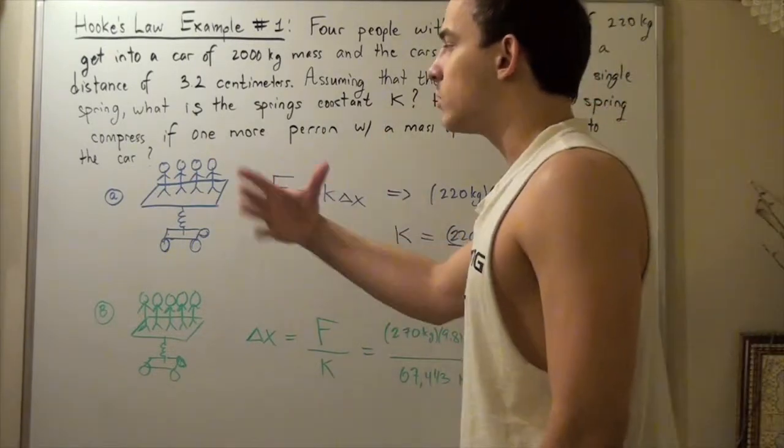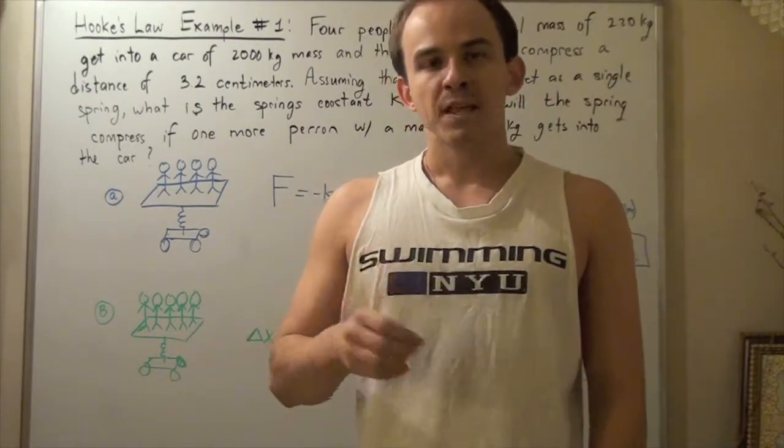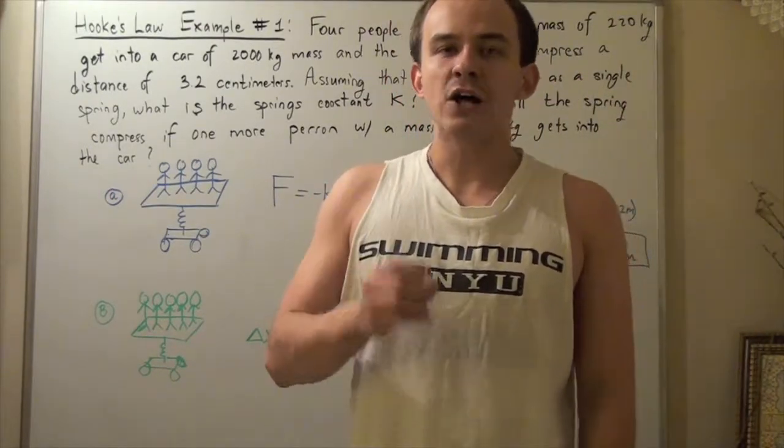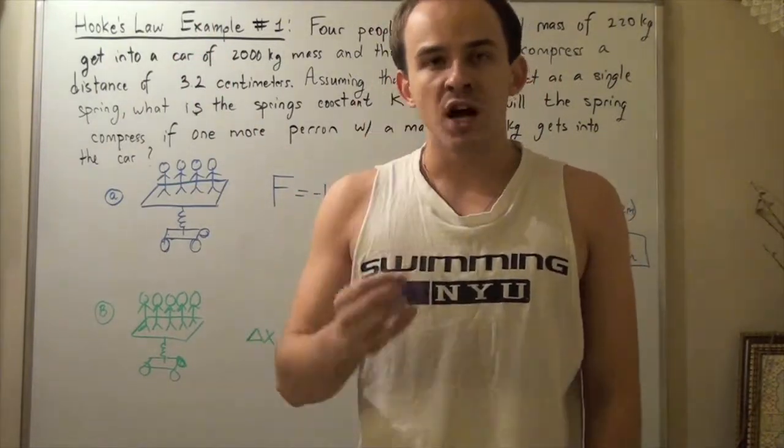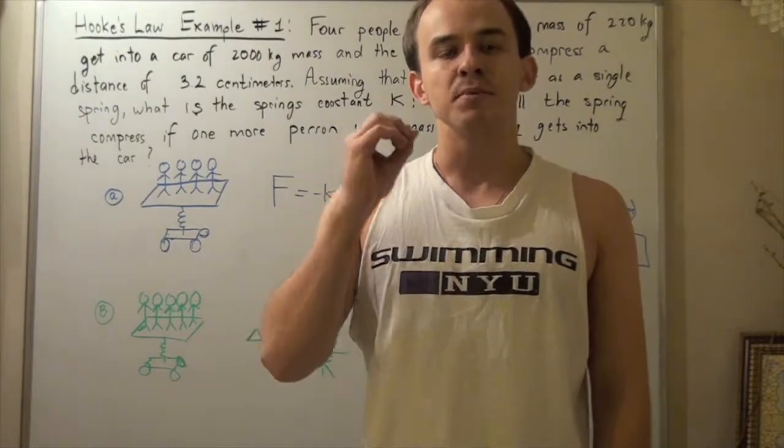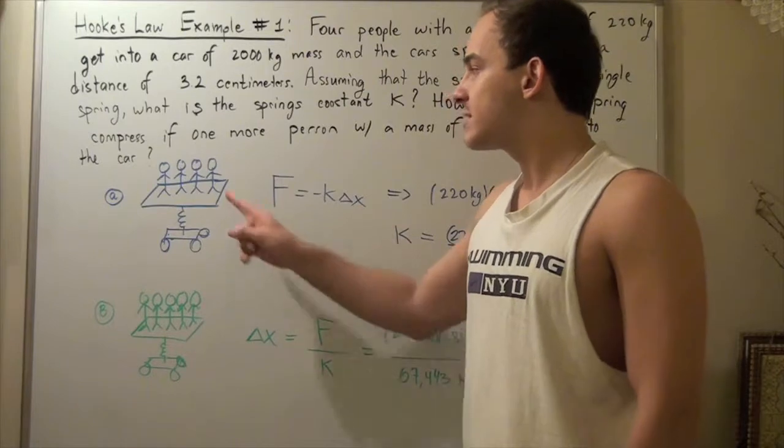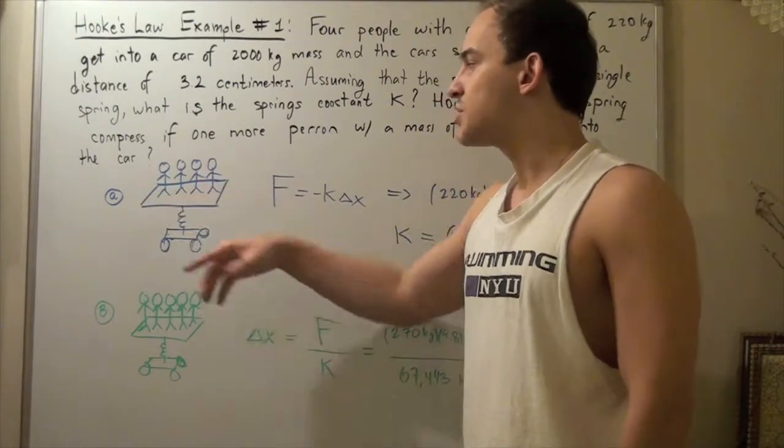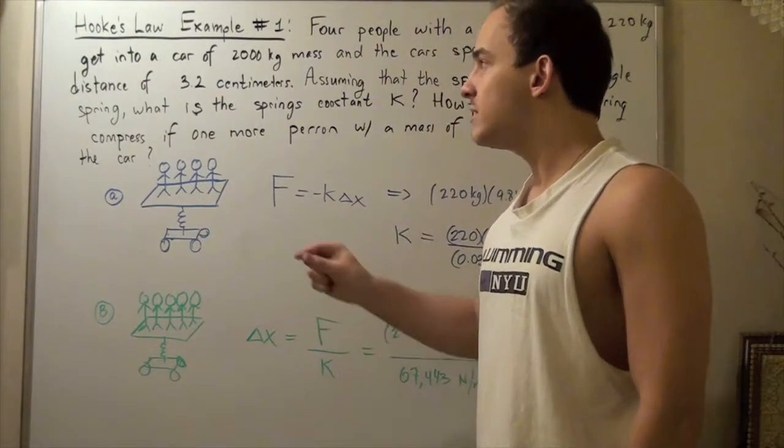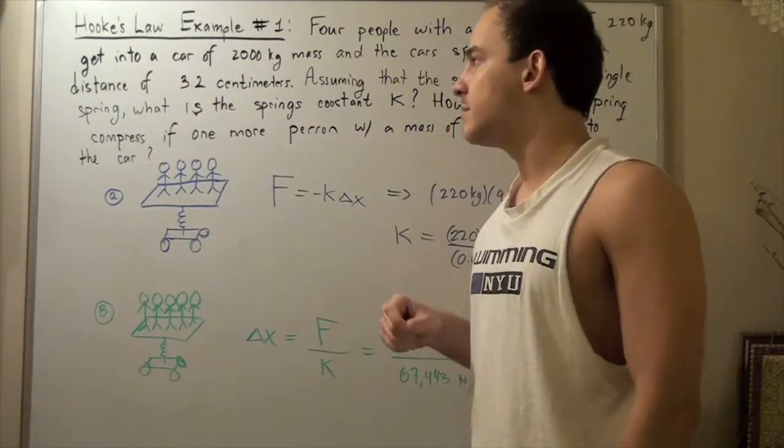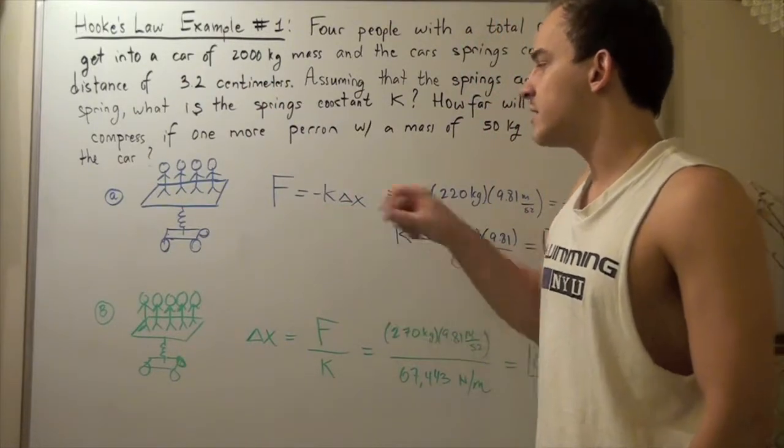So in part A, we're basically trying to find the spring constant k. Now spring constant k can be found using Hooke's Law and knowing the total mass, the gravitational constant g, as well as the displacement of our car. We have four people that have a total mass of 220 kilograms get into a car and the spring compresses a distance of 3.2 centimeters. Using that info and Hooke's Law, we have to find our constant k.